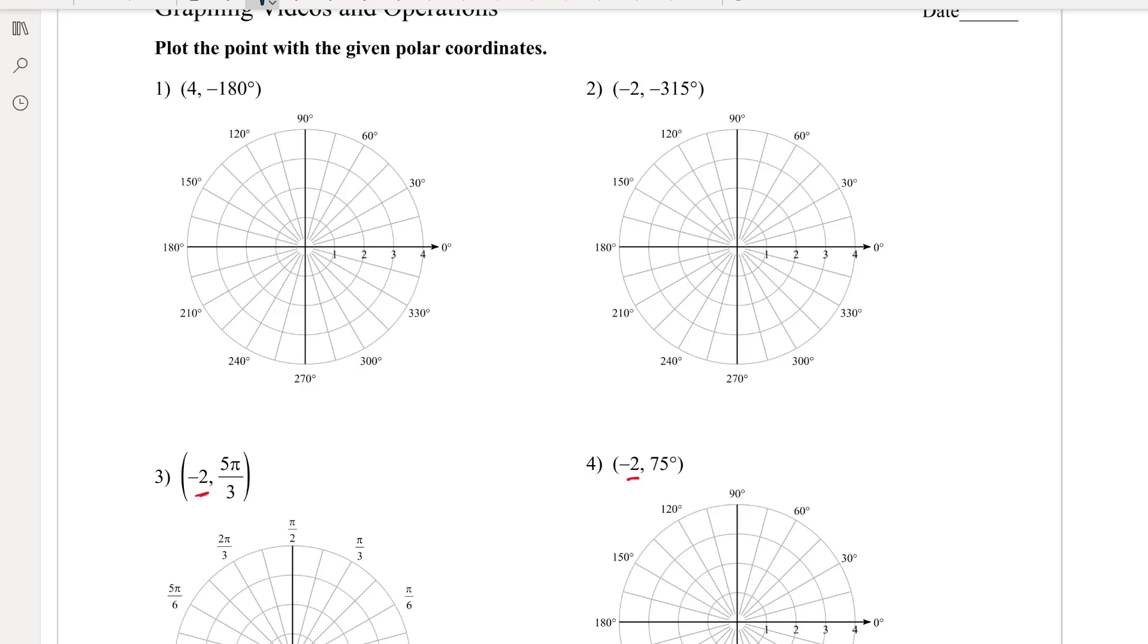So -180°. We're going to start here at zero and go in the negative direction. So -180° is the same as positive 180°, but we went in the negative direction. And then we go out radius of 4. One, two, three, four. So this right there is (4, -180°).